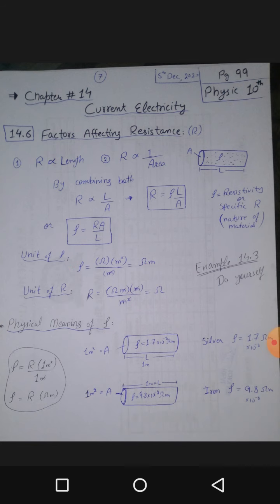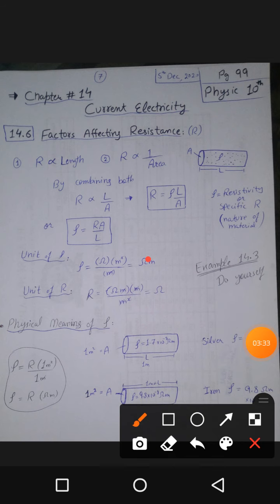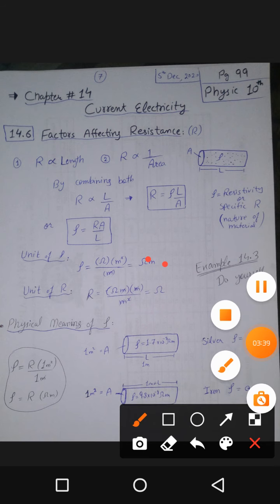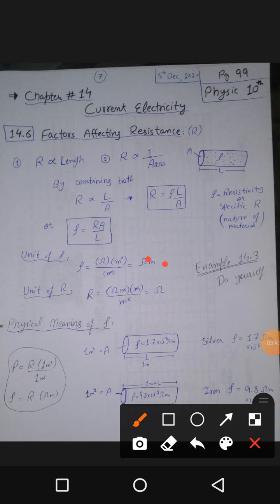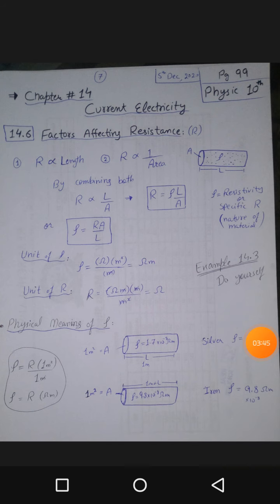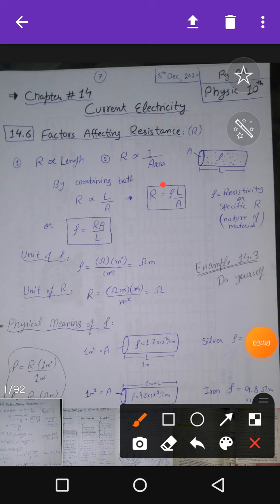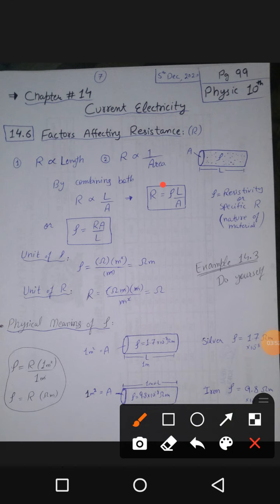The physical meaning of resistivity is how many ohms a conductor provides per one meter of its length. We can also verify the unit from the resistance formula — putting ohm·meter for resistivity, meter for length, and meter square for area. The unit of resistance should come out as ohms, since from V = IR we know resistance is in ohms. Solving confirms that the unit is indeed ohms, proving resistivity's unit is ohm·meters.